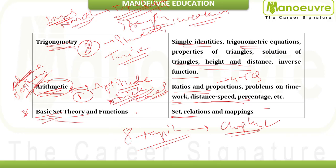Last, go to set theory. The reason set theory is last is that its questions often combine multiple topics — for example, defining a set using an algebraic equation where you need to find roots, requiring knowledge of algebra and trigonometry. Rather than jumping between topics, following this sequence will allow you to attempt more questions and have a proper structured preparation for maths.